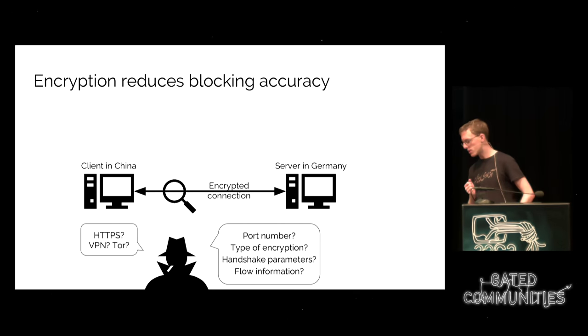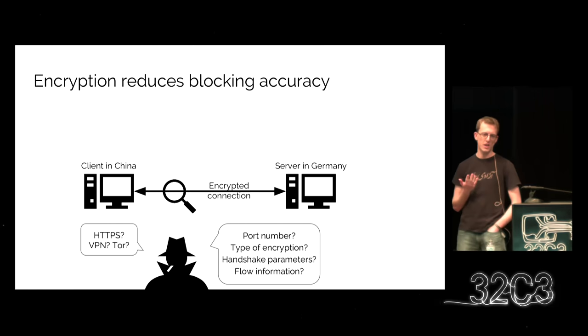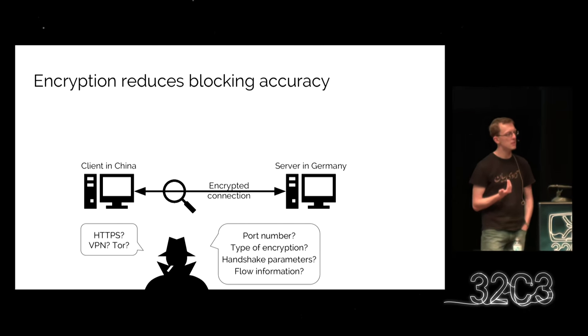If all else fails, you can still look at flow information — packet lengths that leak information, timings, and directions of packets. All these things can be used, but they only give you an educated guess. Often there is just not enough information to really know that this is something you want to block. There is some uncertainty left, and this is poison for censors, since uncertainty leads to collateral damage — meaning they end up blocking more than they really want to.